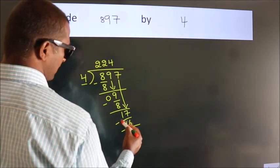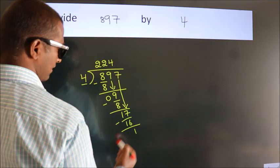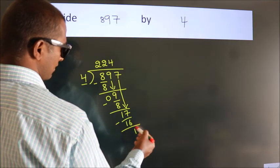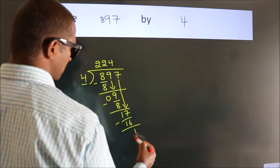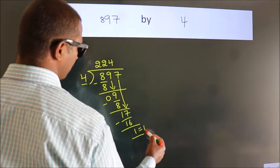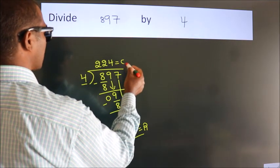Now we subtract and get 1. After this, no more numbers to bring down, so we stop here. This is our remainder, and this is our quotient.